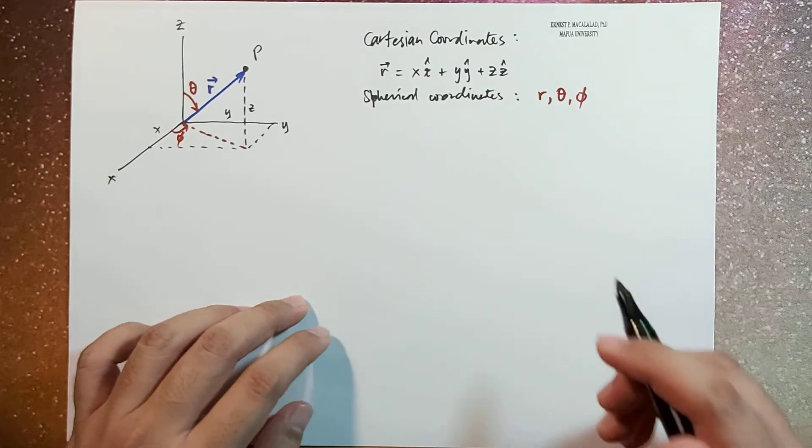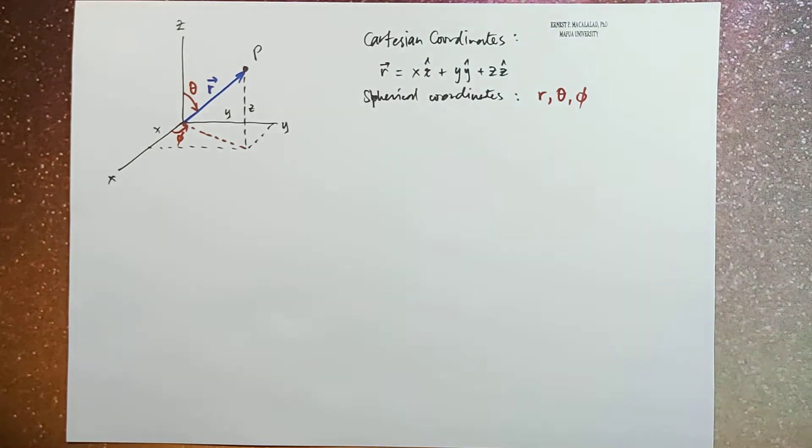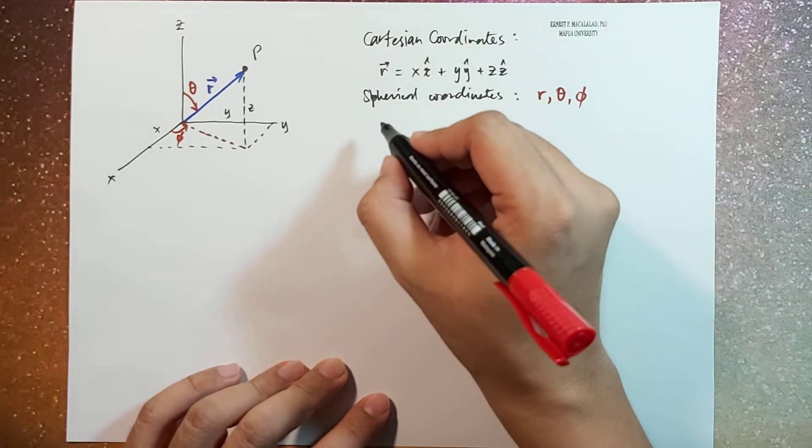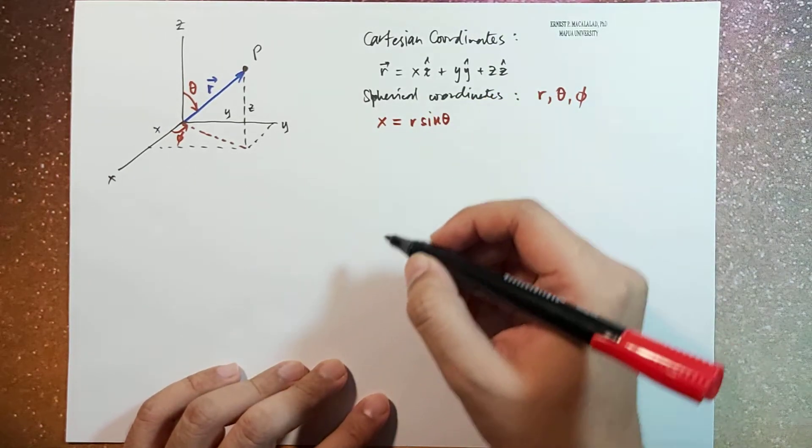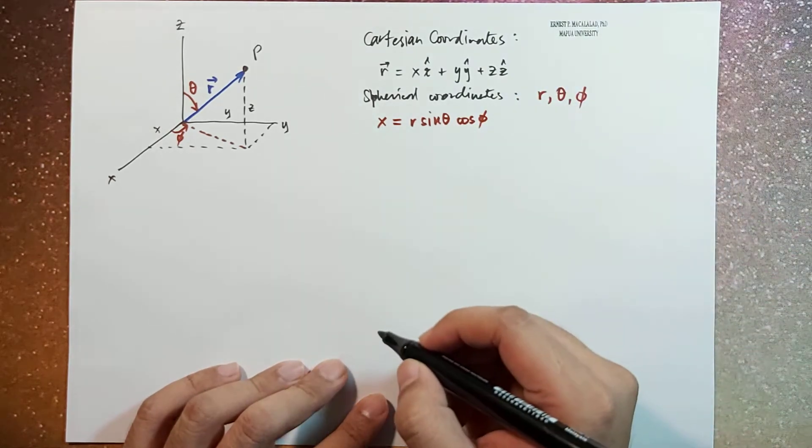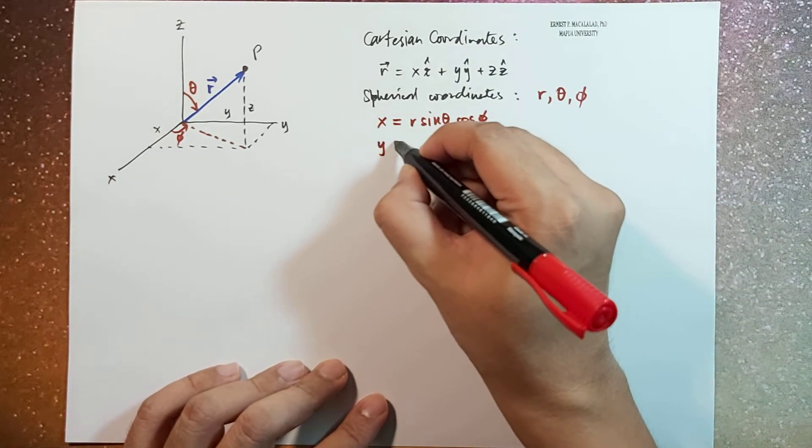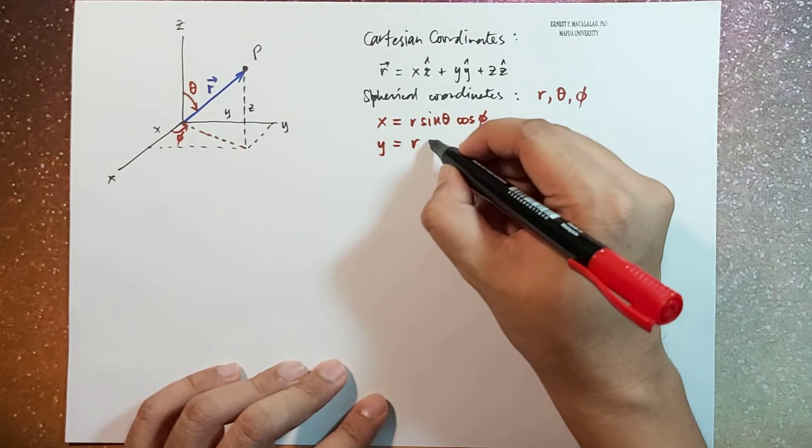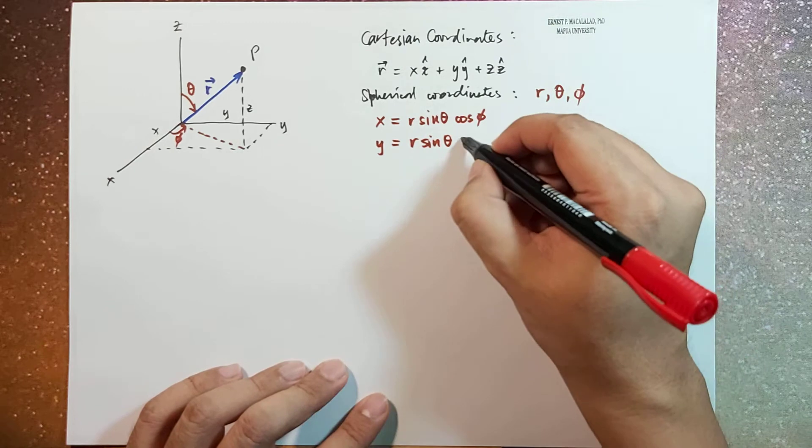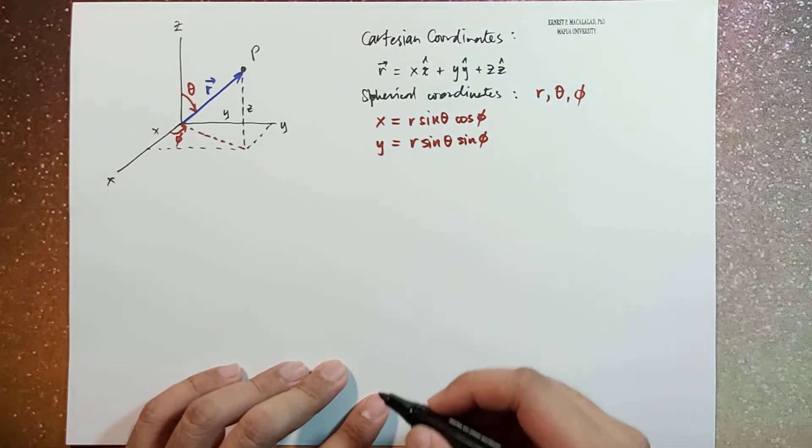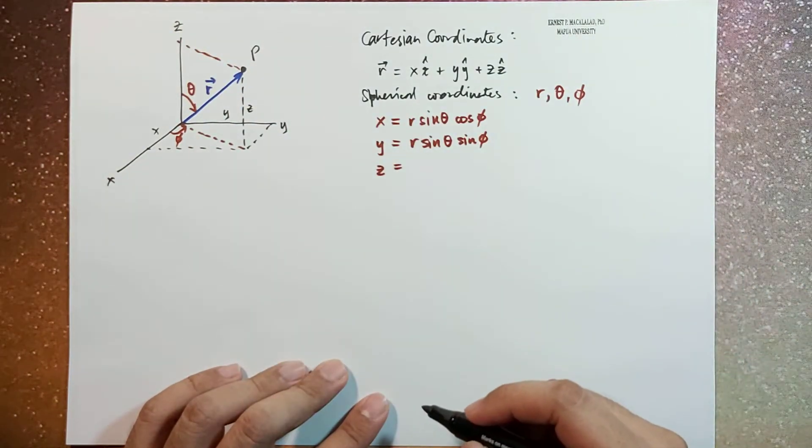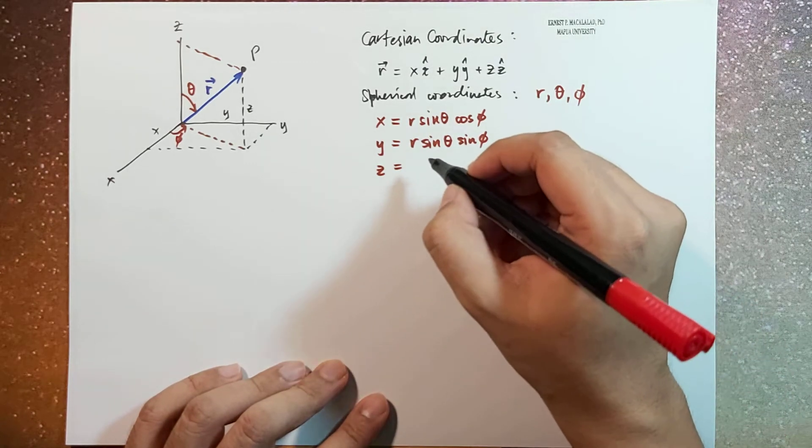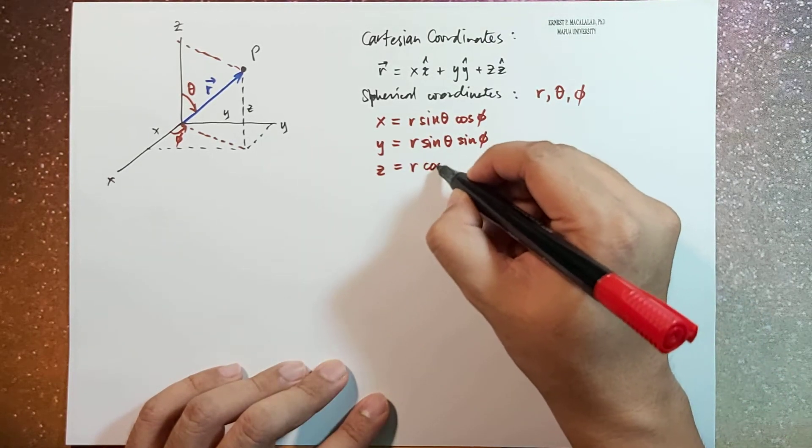The distances x, y, and z are related to r, theta, phi by this set of equations where x is equal to r sine theta cosine phi, y is equal to r sine theta sine phi, and z is equal to r cosine theta.